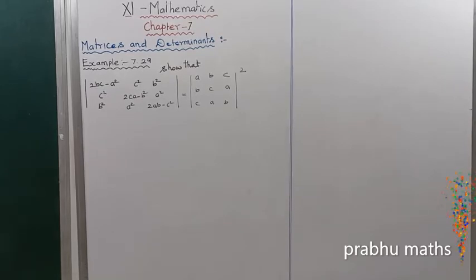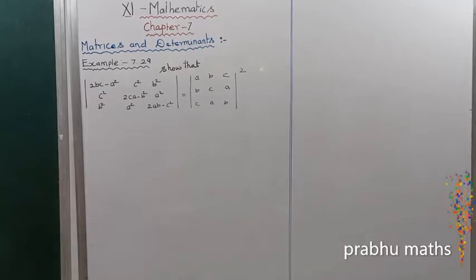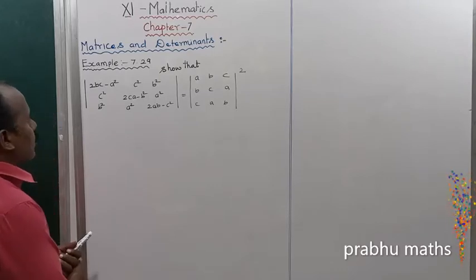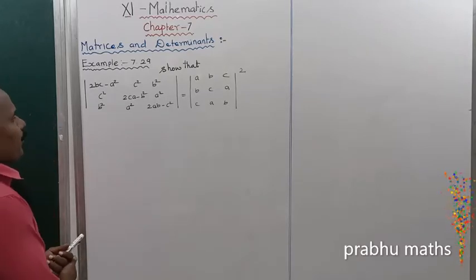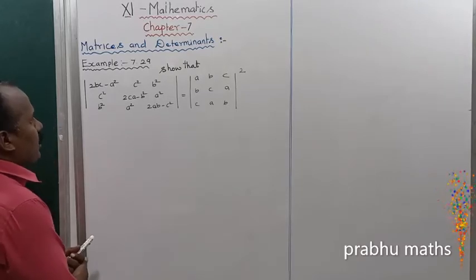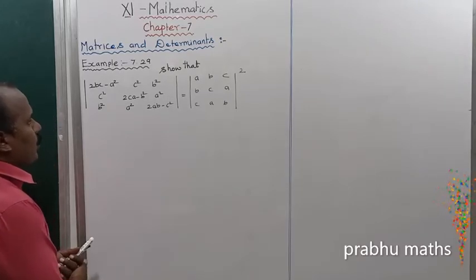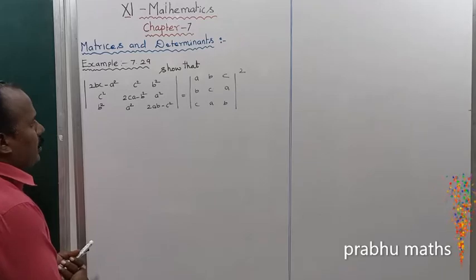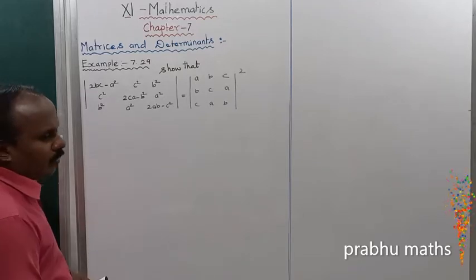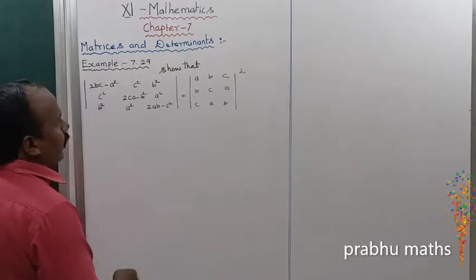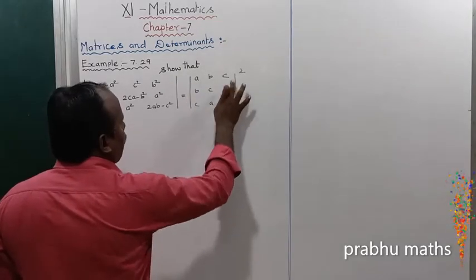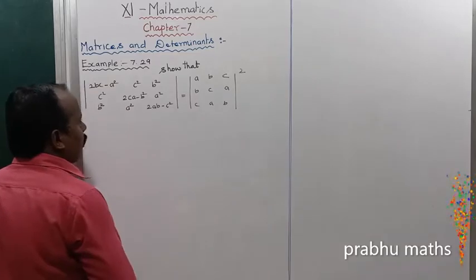Example 7.29: Show that the determinant with entries 2bc-a², c²-b², b²-a², 2abc² equals abc+bca+cab, the whole square. That is, the determinant of the circulant matrix [a,b,c; b,c,a; c,a,b] squared.